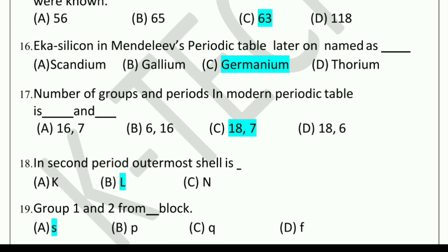Next question: Eka-silicon in Mendeleev's periodic table was later on named as dash. Options: scandium, gallium, germanium, or thorium. The answer is germanium.